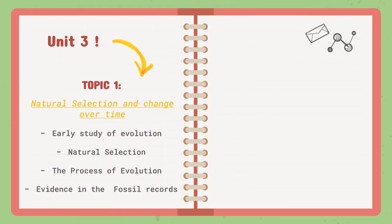In this third unit, you are only going to have one topic composed of four lessons. So the topic is natural selection and change over time. We have four lessons: early study of evolution, natural selection, the process of evolution, and evidence in the fossil records.